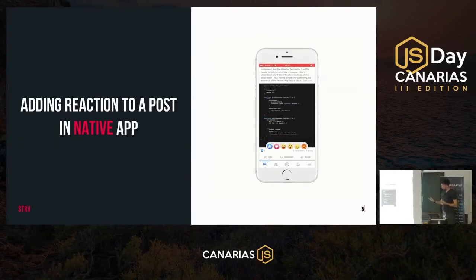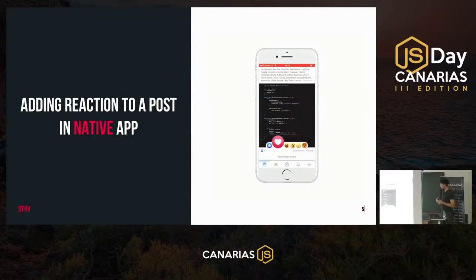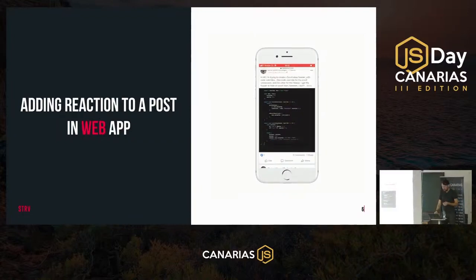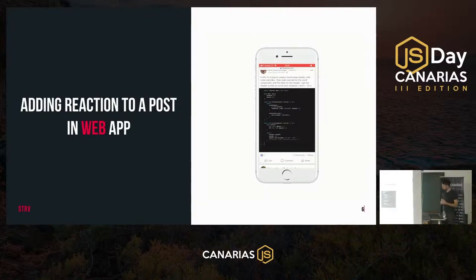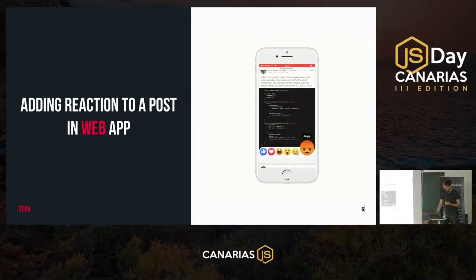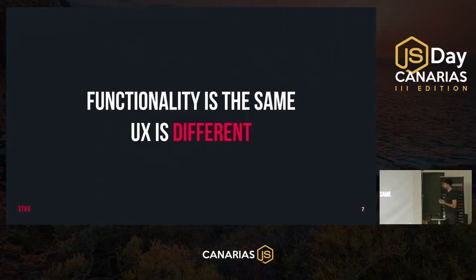To see why that might be, I want to show one simple interaction: adding a reaction to a Facebook post. In the native app we get a nice toolbar that pops from the bottom, all the emojis are animated and alive, and we get a nice bubble animation when we hover over them. On the web it works kind of the same but it's a little laggy and lacks those nice finishing touches of the native app.